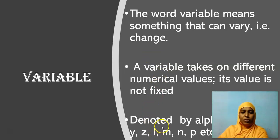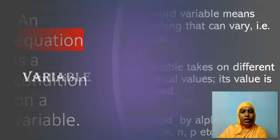Any letter alphabets. But it should be represented using small letters and not capital letters. And with the help of this variable, we are going to see a new word that is related to our chapter. It is nothing but equation. What is an equation? An equation is a condition on a variable.